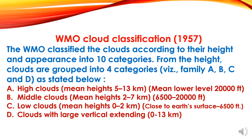From the height, clouds are grouped into 4 categories: Family A, Family B, Family C, and Family D. Family A is high clouds, with a mean height ranging from 5 to 13 kilometers, and a mean lower level of 20,000 feet. Family B is middle clouds, with a mean height of 2 to 7 kilometers, or 6,500 to 20,000 feet. Family C is low clouds, with a mean height of 0 to 2 kilometers, close to the Earth's surface up to 6,500 feet. Family D is clouds with large vertical extent, from 0 to 13 kilometers.